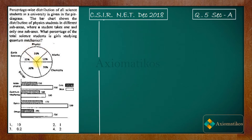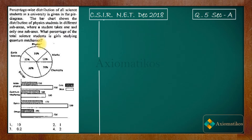Out of these total physics students, every physics student is going to take one sub-area. The sub-areas are astrophysics, quantum mechanics, optics, and others. What we have to do is find out the percentage of the total science students who are girls studying quantum mechanics.